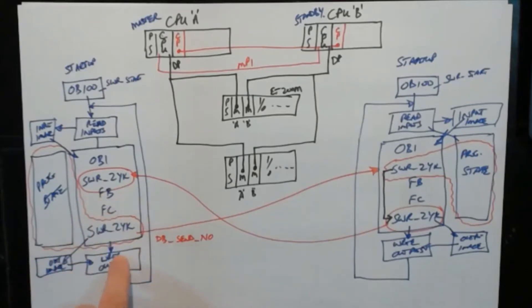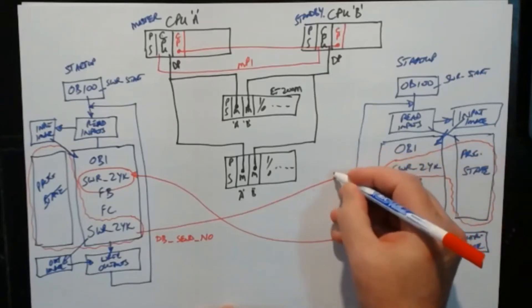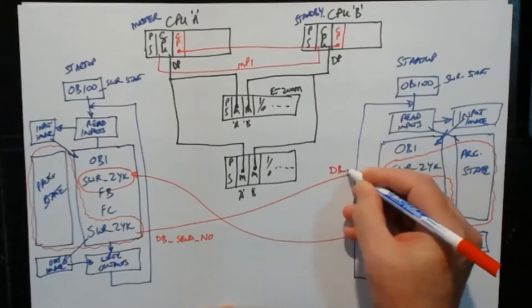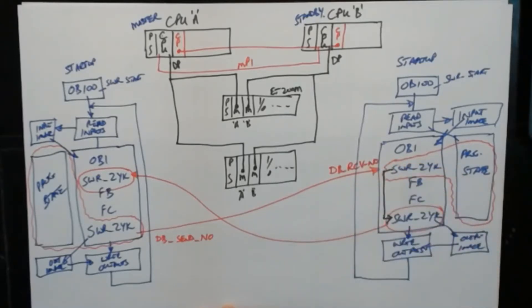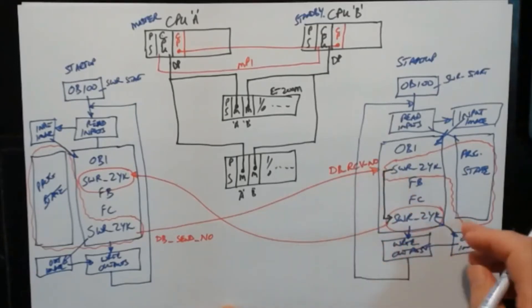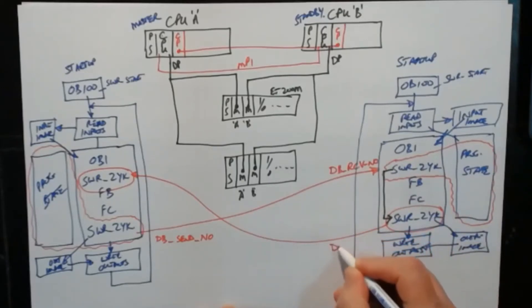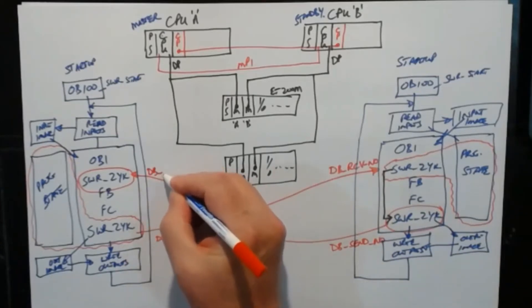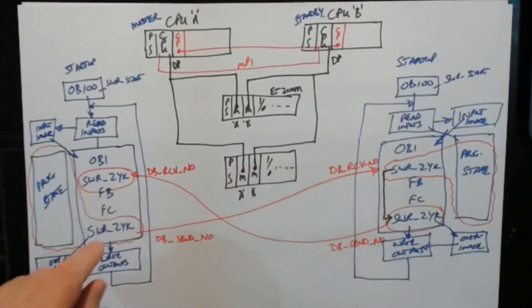The information in this CPU will be kept in this DB and then used to send to the standby CPU. And the other CPU has got a DB_RCV_NO, a receive DB. So it sends across and then the standby CPU or the other CPU will package data into DB_SEND_NO on its own side and send that to DB_RCV_NO on the CPU.